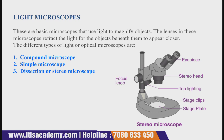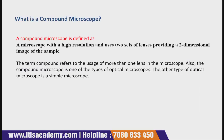Light microscopes use light to magnify the image. The lenses in these microscopes reflect the light of the object beneath them to make it appear closer. The different types of light or optical microscopes are: compound microscope, simple microscope, and dissection or stereo microscope. The stereo microscope is also known as the dissection microscope.